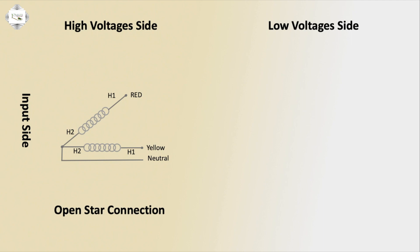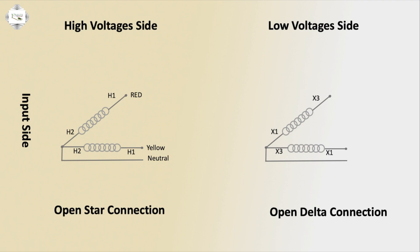On the low voltage side, first coil terminals are X1 and X3, and second coil terminals are also X1 and X3 with a common terminal — this forms the open delta connection. Red coil input gives red output on the low voltage side, yellow output, and blue output. Three-phase line-to-phase voltage is 240 volts on the outgoing side.